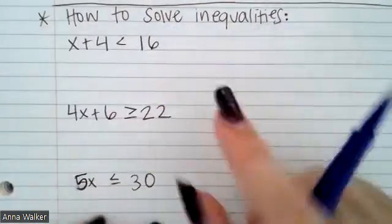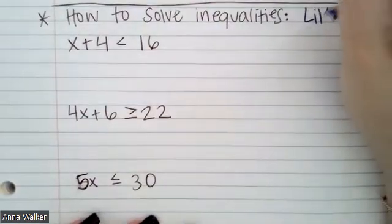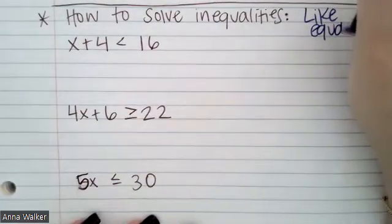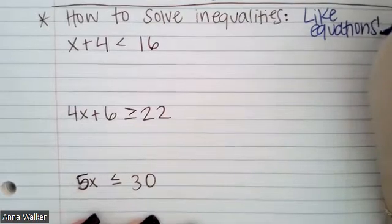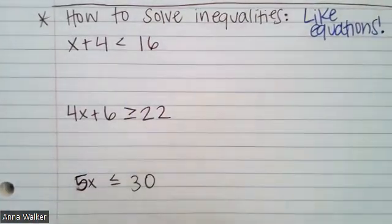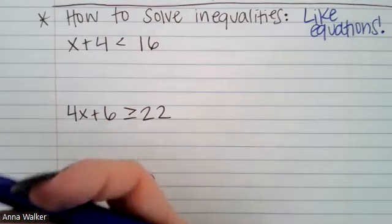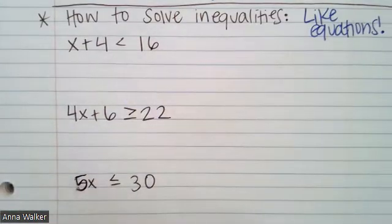It could be a bunch of different whole numbers, but also like even decimals or fractions. Like if I added one half to 4, that's just 4 and a half. 4 and a half is less than 16. I could add a negative number. Like negative 1 plus 4 would make 3. 3 is less than 16. So there's so many possibilities. So we are going to solve our inequalities like we would equations. But instead of saying our variable is equal to one exact number, we're going to use the greater than and less than symbols to represent the set of solutions.